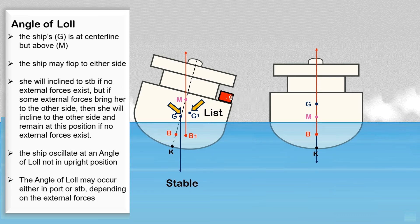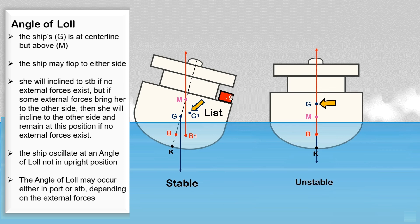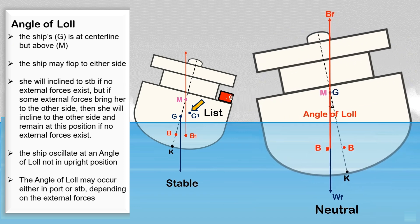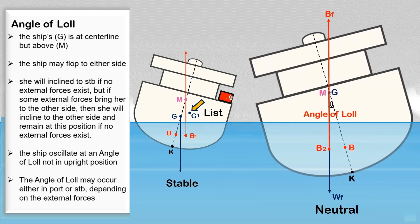As a result, the ship is listing toward where the new G is off the centerline. At angle of loll, the ship's center of gravity is along the centerline — it results when the ship is in an unstable condition. At the angle of loll, the ship may flop to either side. She will heel to starboard and will rest if there are no external forces, but if some external force brings her to the other side, she will heel to that side and remain. The ship will oscillate about the angle of loll instead of her upright position. The angle of loll may occur on either port or starboard depending on the direction of external forces, while in listing the ship will only list to one side towards where the ship's center of gravity is off the centerline.